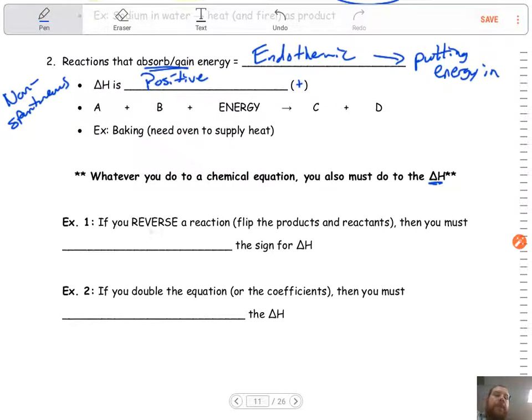So example number one, if we reverse a reaction, meaning you flip the products and the reactants, then what do we have to do for the sign of the delta H? Well, if we reverse it, we flip the products and reactants. So what we're going to do with the sign, we're going to flip the sign.